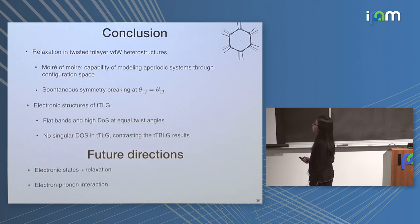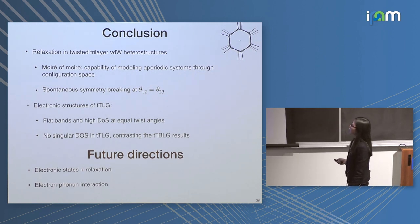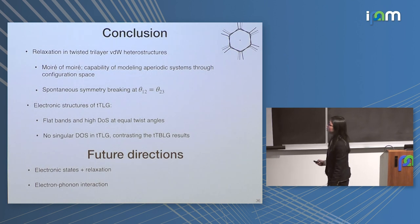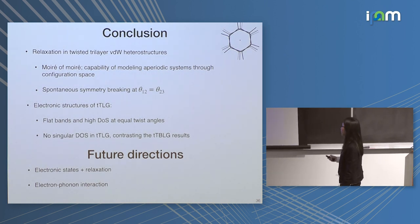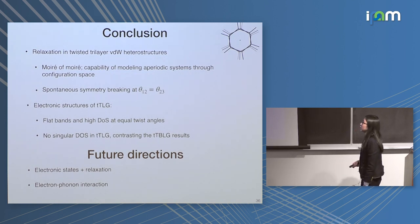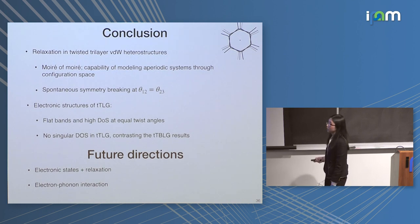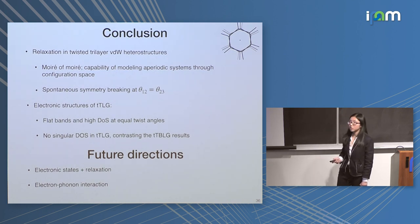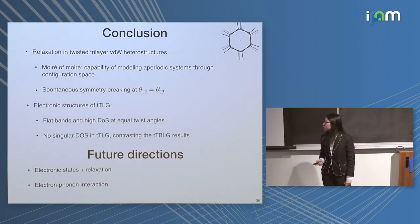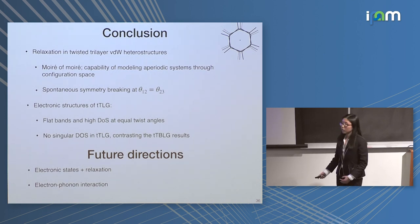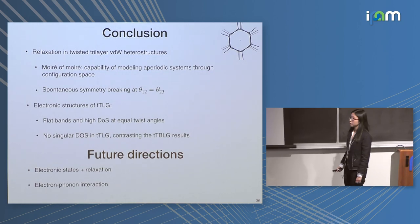In conclusion: I showed you that relaxation in twisted trilayer Van der Waals heterostructures exhibits a moiré-of-moiré pattern, and we saw a symmetry-breaking solution at equal twist angles that is very specific to twisted trilayer systems. I also showed the electronic structure calculation in twisted trilayer graphene — despite the difficulty in calculations, we saw flat bands and high density of states at equal twist angles, but we don't see very singular density of states, which is very different from twisted bilayer graphene. Future directions include combining the electronic state calculation with the relaxation correction, and studying electron-phonon interaction. Thank you for your attention.